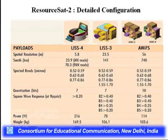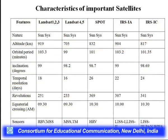Various spectral bands are available across different satellites. It is also important to see the characteristics of other satellites like Landsat-1 through 5, SPOT, IRS-1A, IRS-1C. For IRS-1C specifically: nature sun-synchronous, altitude 817 km, orbital period 101.35 minutes, inclination 98.69 degrees, temporal resolution of 24 days, resolution 341, and sensors include LISS-3, PAN, and WiFS.